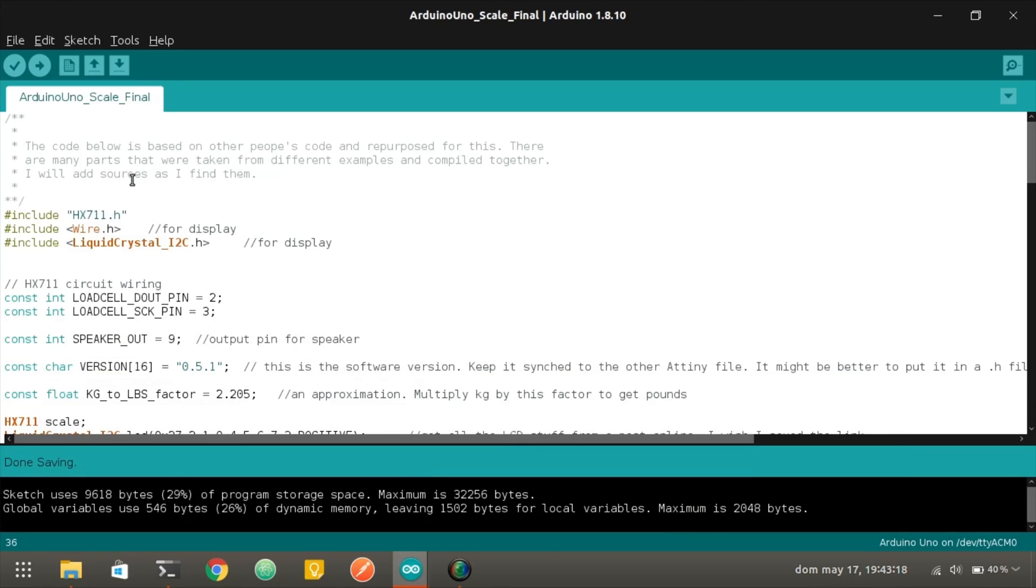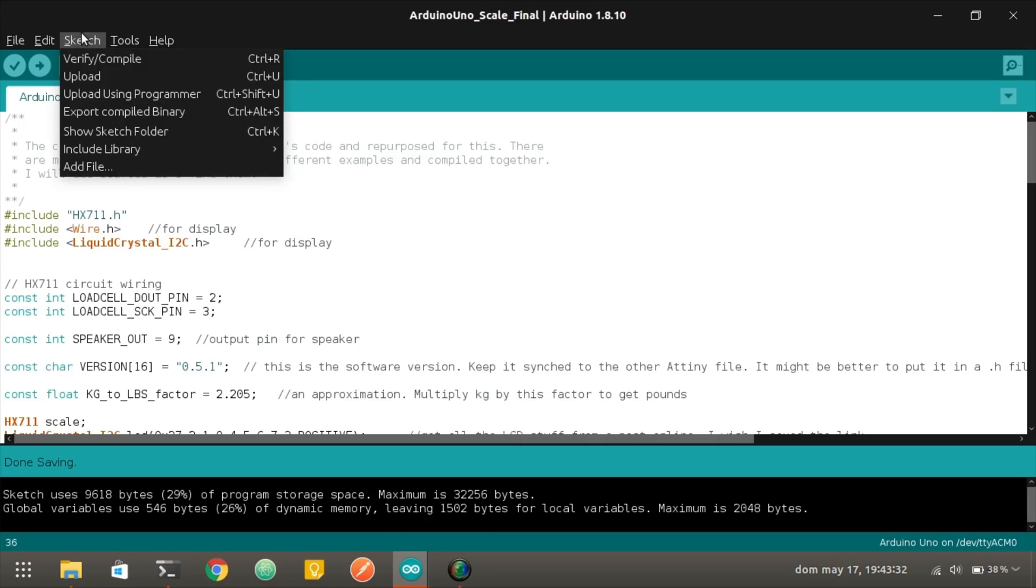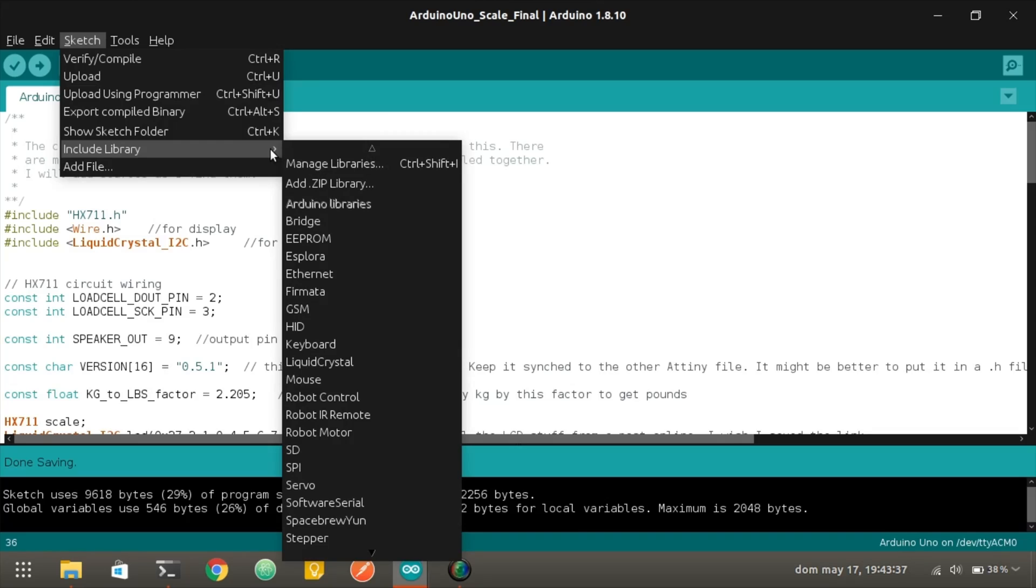Now let's switch over to the Arduino code. I'm using Arduino IDE version 1.8.10 for this project. And here you can see the three libraries that will be needed: HX711, Wire, and Liquid Crystal. If you don't have them installed already, check if they are available from the Library Manager. You go to Sketch, Include Library, and then Manage Libraries or add a zip file.